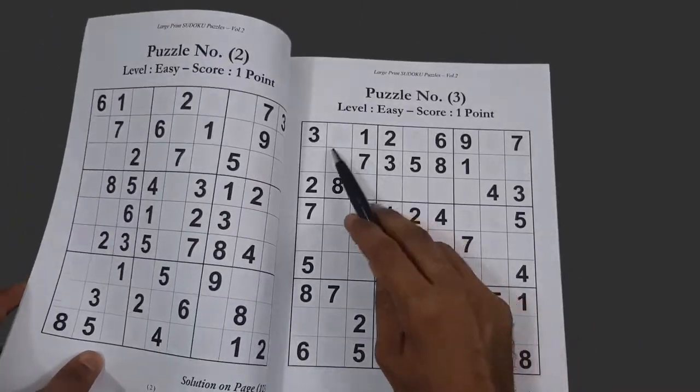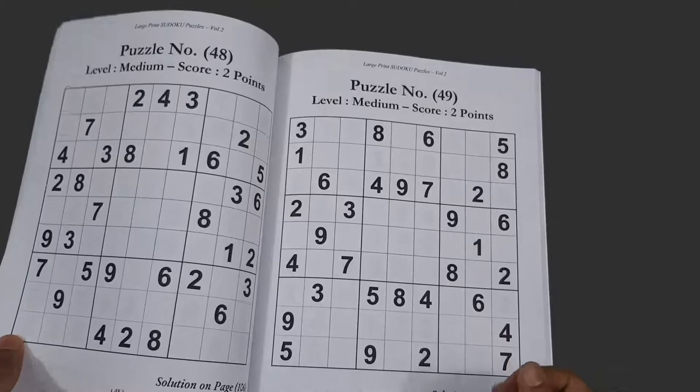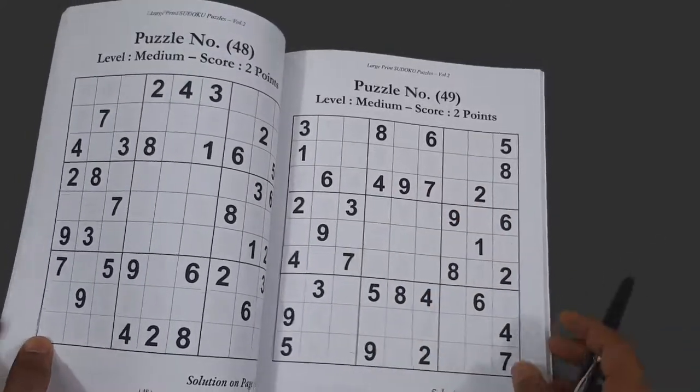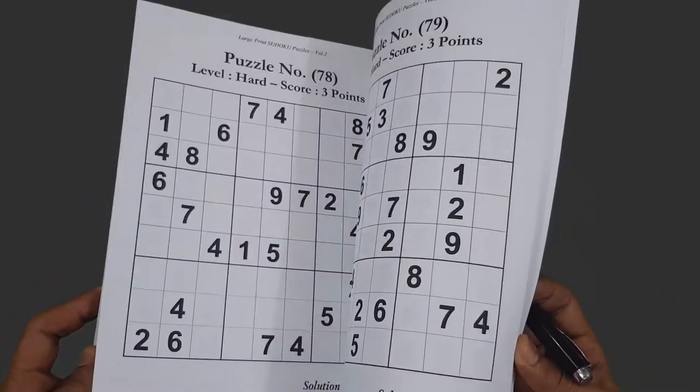You can see this is the easy difficulty with a score of one point. And then as you go on through the book, you can reach different difficulties. Here we have reached medium with a score of two points. You go on through the book trying to solve different puzzles.